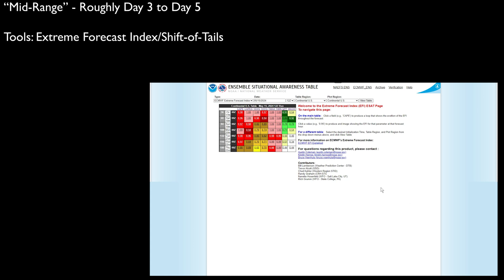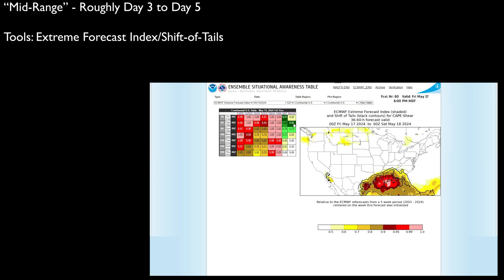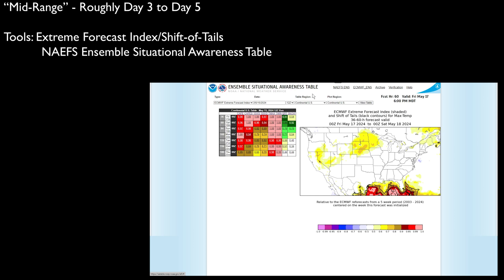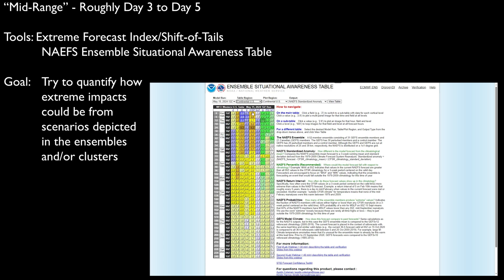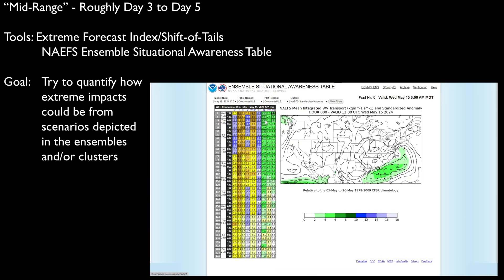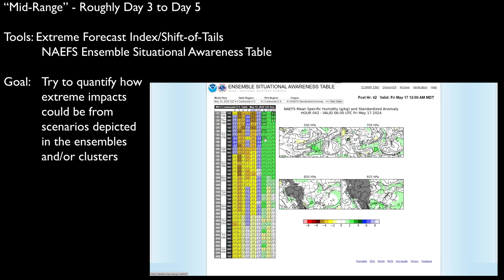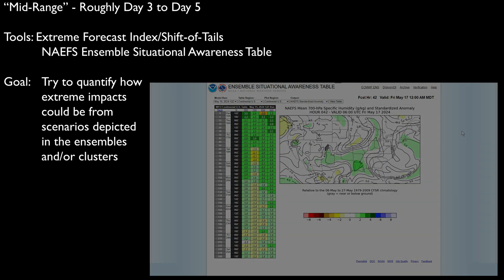As we approach approximately five days from the event, additional tools become available. The first would be the Extreme Forecast Index and Shift of Tails, where you can quickly look at where the ECMWF is potentially forecasting extremes of several surface-based parameters and how extreme it could be. For the GEFS and CMC, you can look at the NAIFS Ensemble Situational Awareness Tables, which provide climatological context to what the current runs of the NAIFS are showing. These two tools allow you to start to view the scenarios from cluster analysis in terms of how extreme impacts could be. Your expertise in meteorology and hydrology also allows you to recognize scenarios that clusters may not have picked up on, or potential outliers that the extremes may not recognize, but you do.